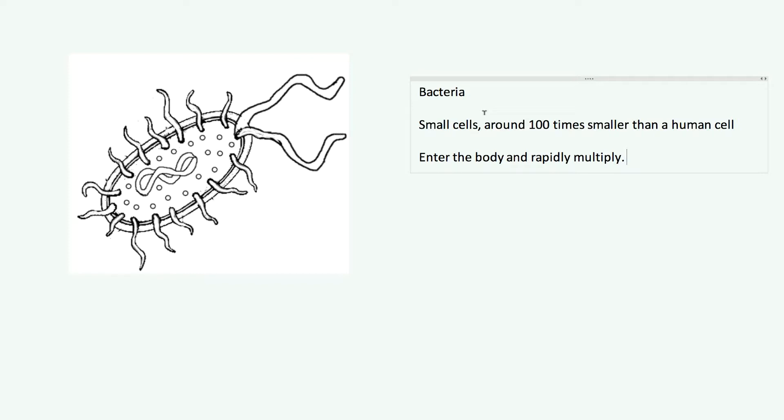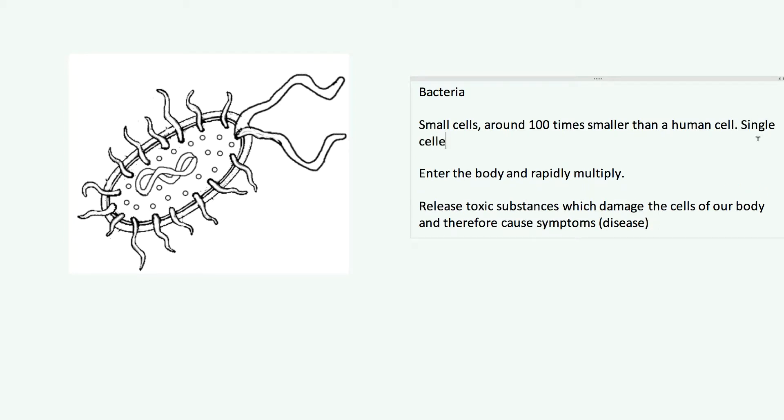If you start off with a few bacteria inside you, eventually you're going to have millions of these things inside your body. That's when you start to see the symptoms of a disease. What they do is they release toxic substances which damage the cells of our body and therefore cause symptoms. Some of those can be classed as diseases. They release toxic substances which damage the cells of our body and therefore they cause symptoms and disease. Bacteria are small cells. They are actually single-celled organisms. They can enter our body and obviously they can release these substances and that is no good.